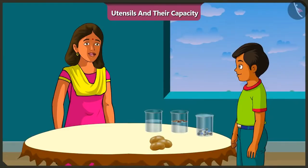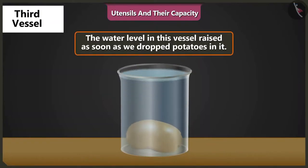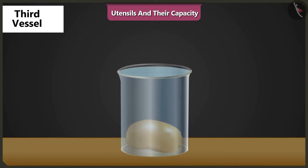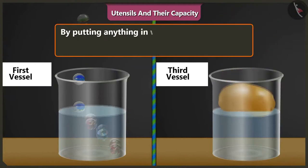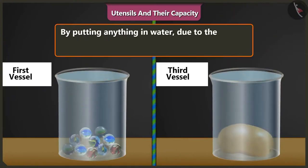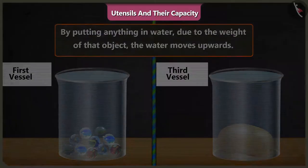Come on, Mishtu. Now let's drop these potatoes in the third vessel. Wow! The water level in the vessel raised as soon as we dropped potatoes in it. So, we saw that when we drop any object in water, due to the weight of that object, the water moves upwards. Yes, I understood.